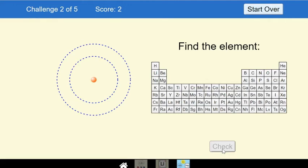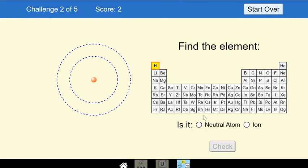Find the element right here. Okay, so that's just one proton. So hydrogen. Is it neutral or an ion? Well, now there's no electrons on there. So I'm going to say an ion because it's not balanced out.